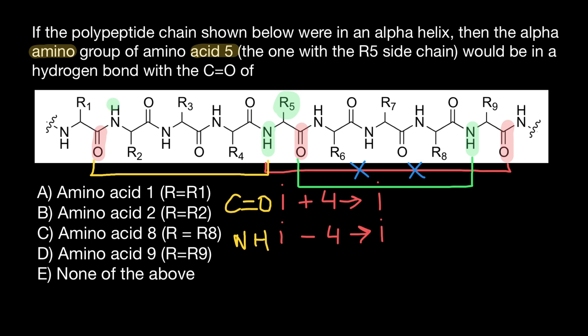Now let's check your knowledge again. With which group will the amino group of amino acid number two make a hydrogen bond? Using i minus four, two minus four gives a negative result — this is the first amino acid, and this is the amino group, which means this is the beginning of the polypeptide chain and the end of the alpha helix. This amino group is not going to have a carboxylic group in the upstream region. The same is true for the amino groups of amino acids one, two, three, and four — they also don't have another carboxylic group upstream, so they are going to be lone pairs.